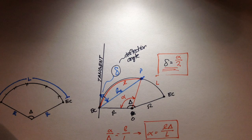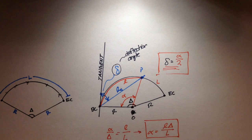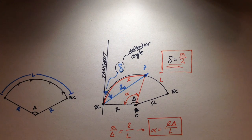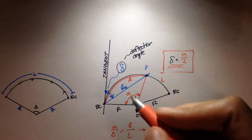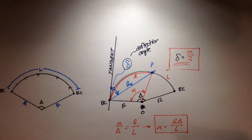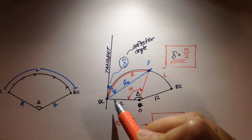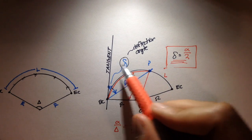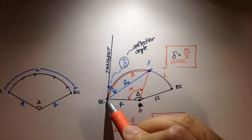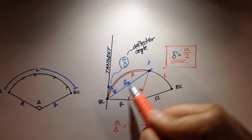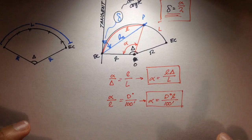Equation three is that the deflection angle equals alpha divided by two, or half of the alpha angle. The fourth equation gives us Lc — we need both the deflection angle and the chord length to stake out a point. Lc is the straight distance from BC to point P.